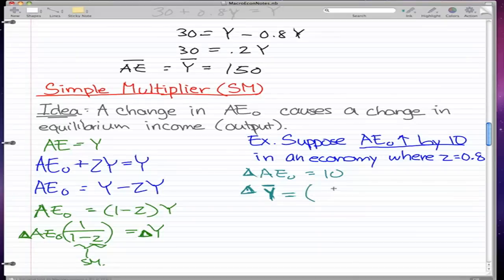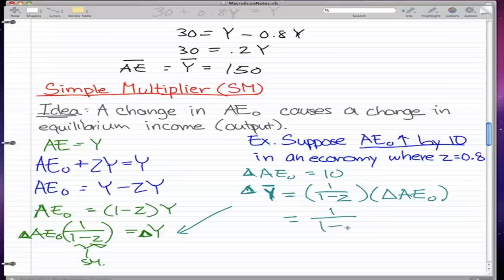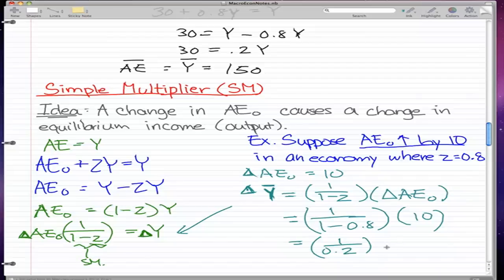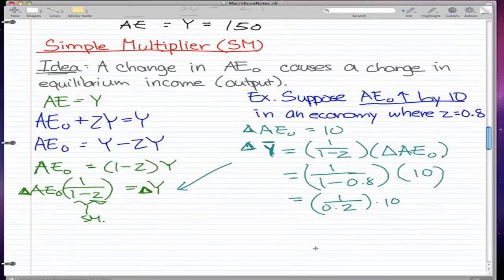We would have change in Y equals exactly what we have in our formula. We would have 1 over 1 minus Z times change in AE0. This would be equal to 1 over 1 minus 0.8 times 10.